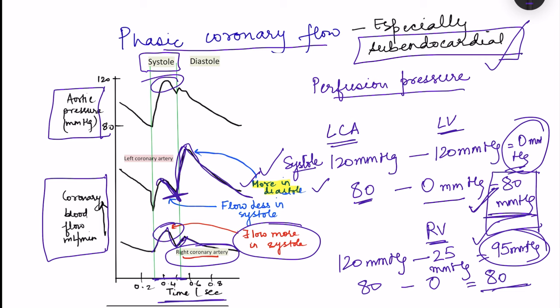In aortic stenosis, the aortic valve is narrowed so the left ventricle must contract much more powerfully to eject blood into the aorta against increased resistance. This greatly increases oxygen demand. That is why aortic stenosis makes a person more prone to ischemia, again especially in the subendocardial region because those vessels are compressed during the more forceful contractions.